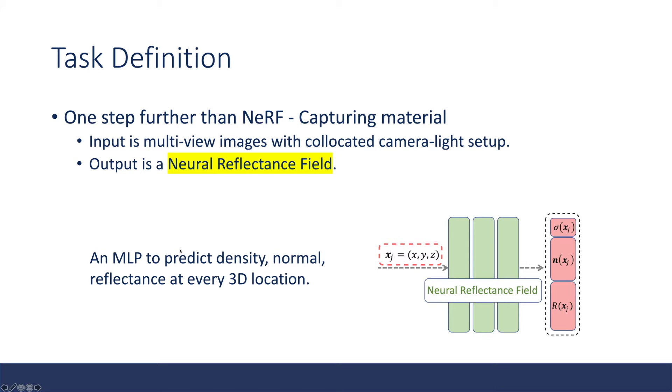What is our representation? A neural reflectance field. Basically it is an MLP to predict density, normal direction, and reflectance properties at every 3D location. Please note that we don't need to feed in the viewing angle because material is a property that does not condition on viewing direction.